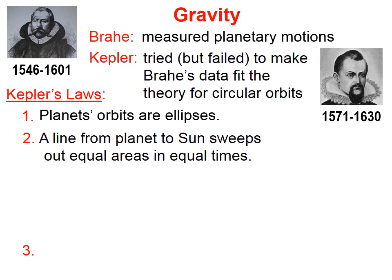Now, they're very nearly circular, but they aren't. Kepler's Second Law says that a line from a planet to the sun sweeps out equal areas in equal times.